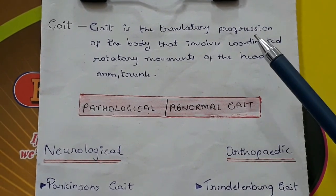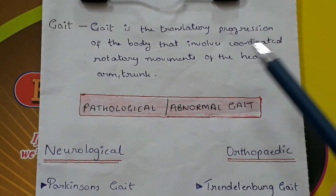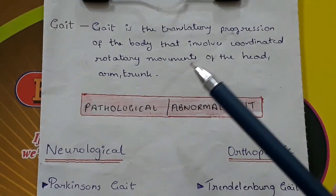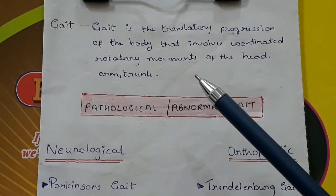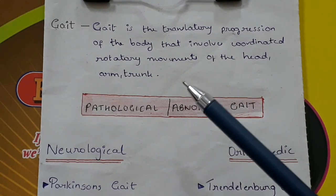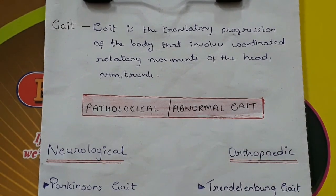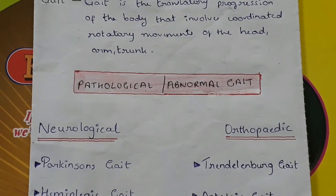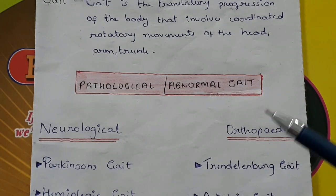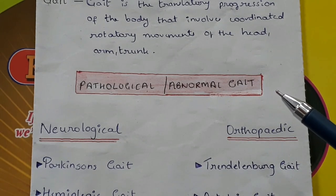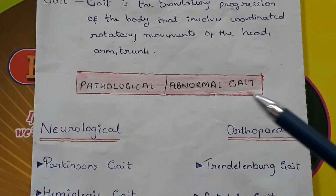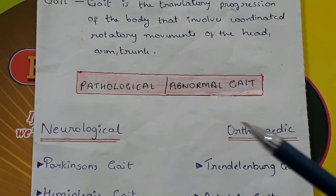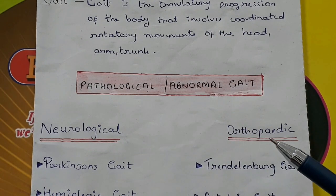Gait is the translatory progression of the body that involves coordinated rotatory movements of the head, arm, and trunk. Pathological or abnormal gaits can be classified into two categories: neurological gait and orthopedic gait.